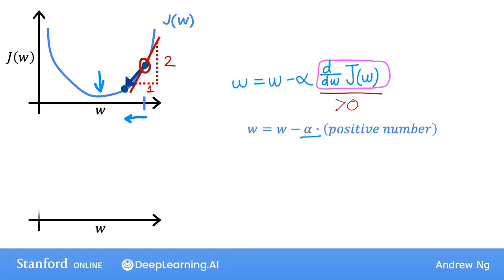Now let's look at another example. Let's take the same function J of w as above, and now let's say that you initialize gradient descent at a different location. Say by choosing a starting value for w that's over here on the left. So that's this point on the function J.